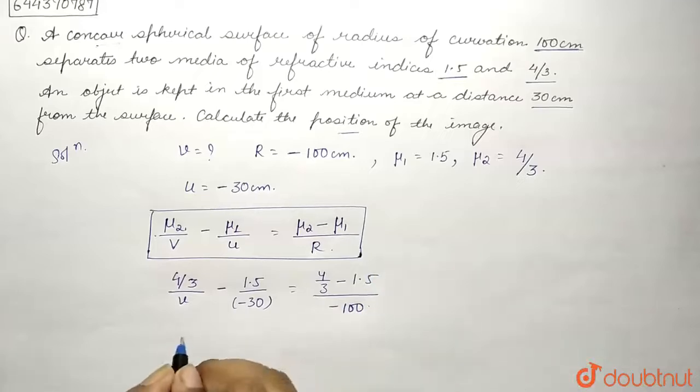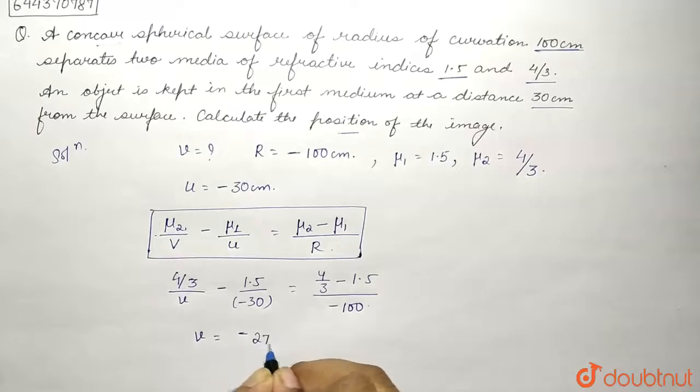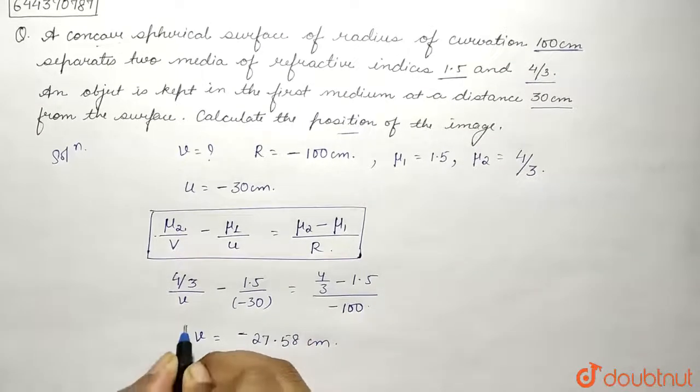So after calculating we will get v equals -27.58 centimeters. This is the final answer and what we needed to calculate, the position of the image.